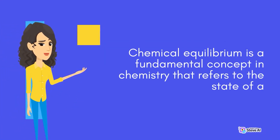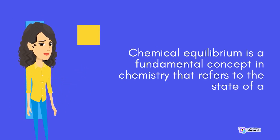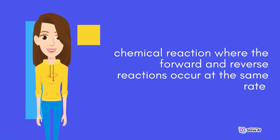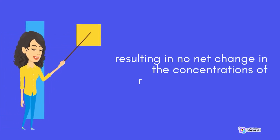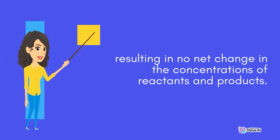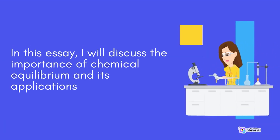Chemical equilibrium is a fundamental concept in chemistry that refers to the state of a chemical reaction where the forward and reverse reactions occur at the same rate, resulting in no net change in the concentrations of reactants and products. In this essay, I will discuss the importance of chemical equilibrium and its applications.